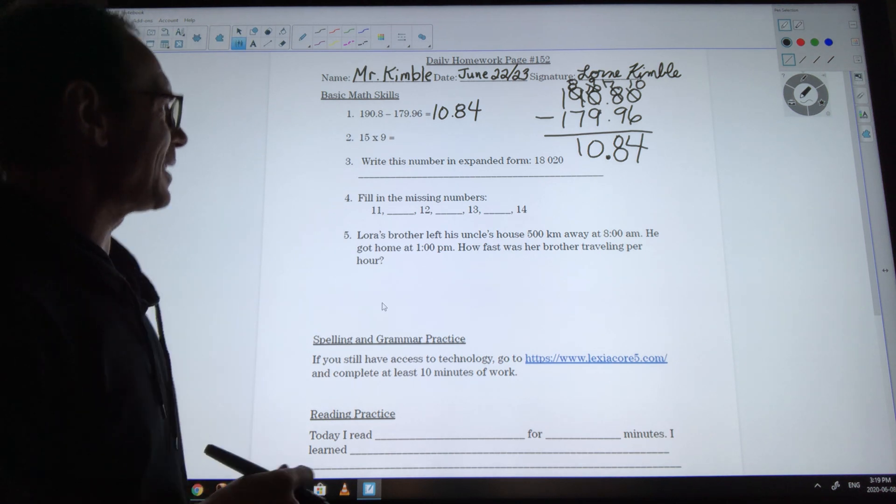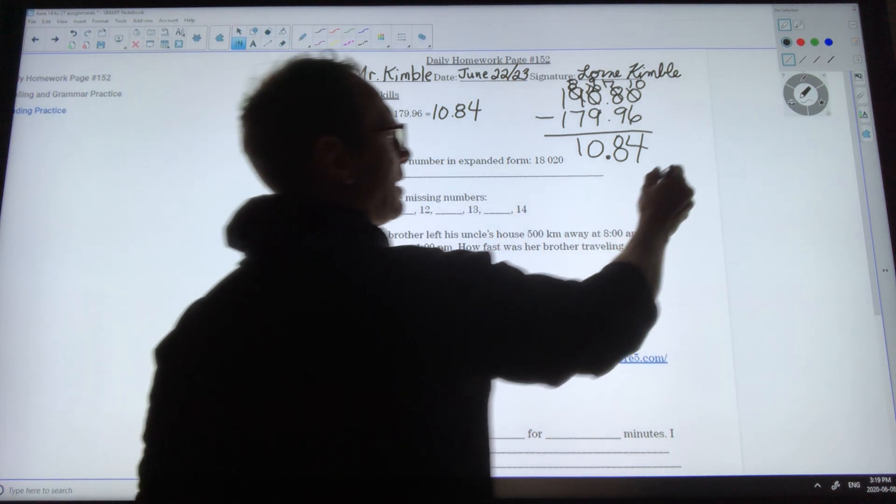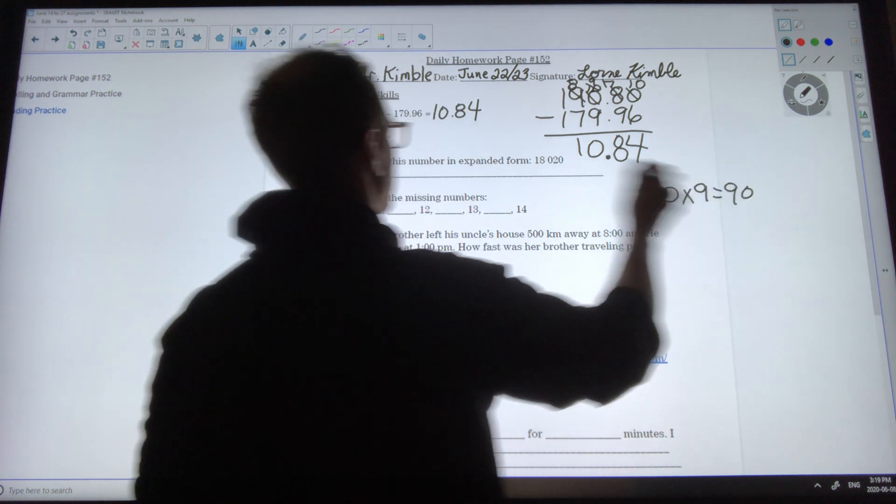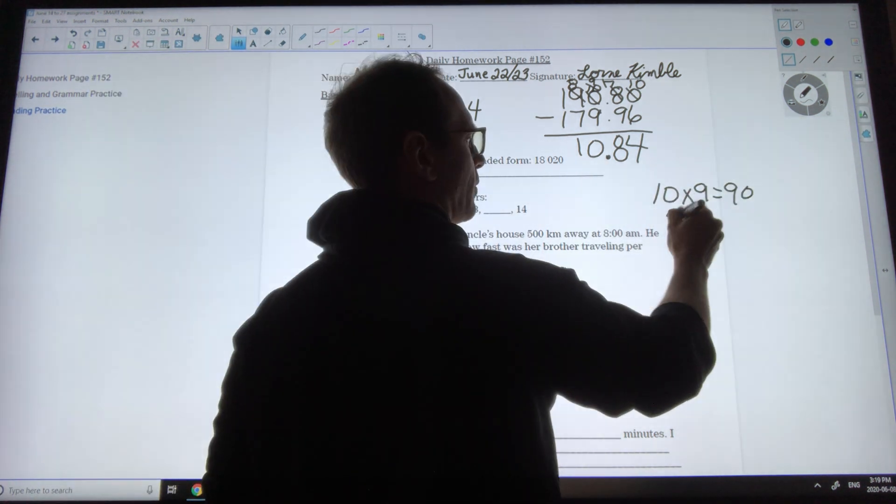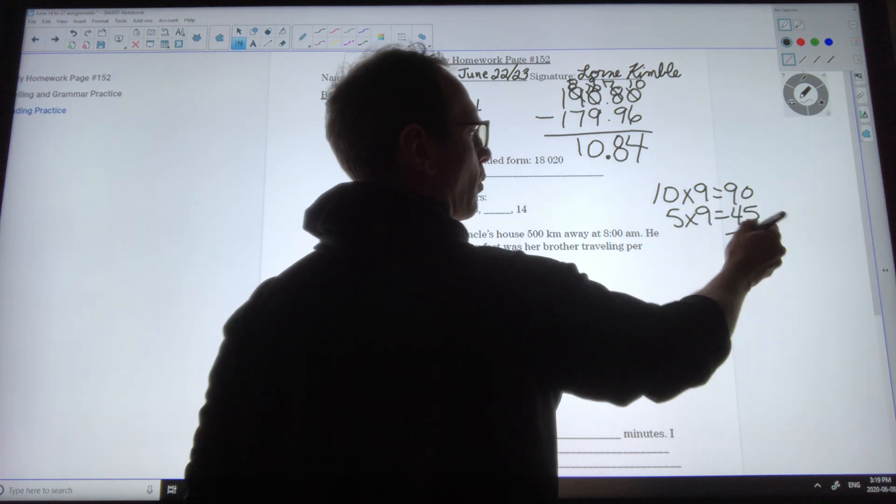Now I have 15 times 9. I know that 10 times 9 is 90 and I know that 5 times 9 is 45, so together these would make 135.